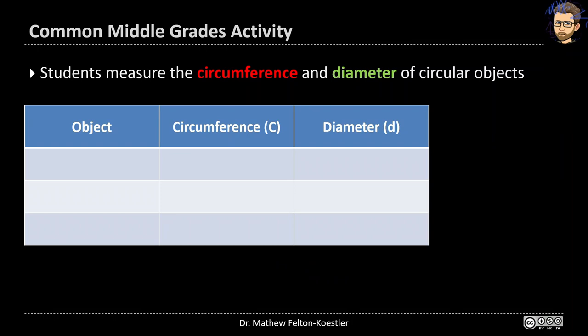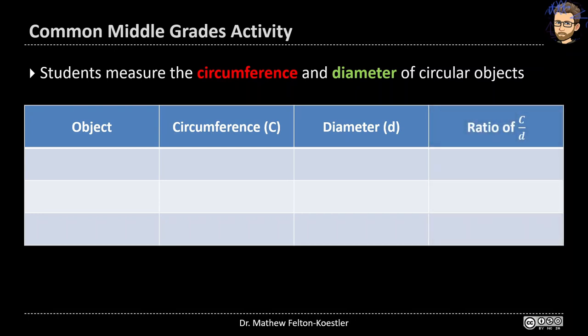They might have a table like this where they write down the object, record the circumference and diameter that they measured, and then at the end they might go through and calculate the ratio of the circumference to the diameter. In other words, they would take the circumference and divide it by the diameter to figure out how many times bigger the circumference is.